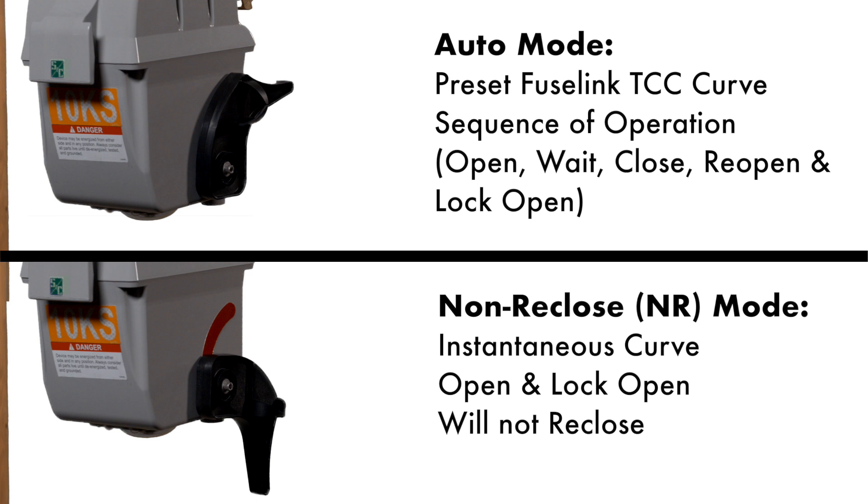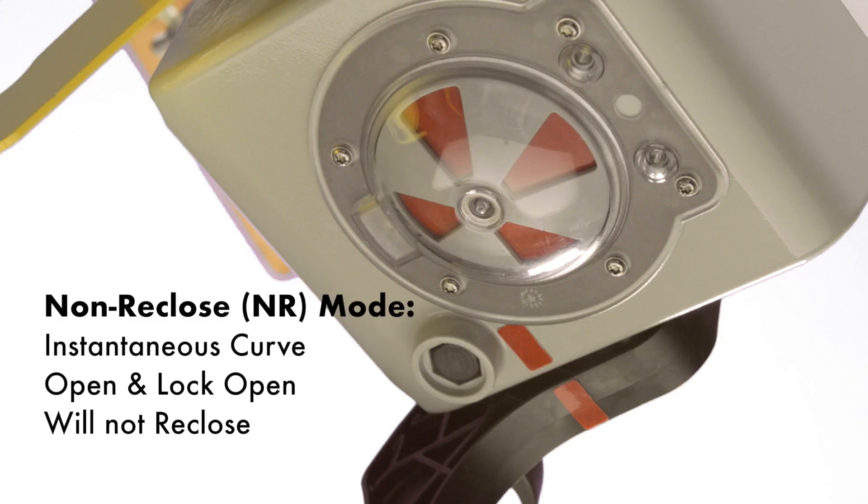In the NR mode, the VacuFuse interrupter will operate using the instantaneous curve. The interrupter will open and lock open and not attempt to re-close if a fault occurs while NR mode is selected. The VacuFuse self-resetting interrupter is in the NR mode when the red line on the lever matches up with the red line on the base of the interrupter's housing.